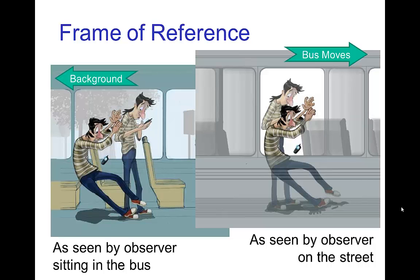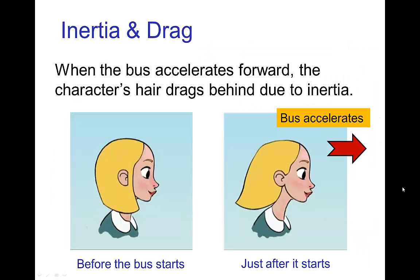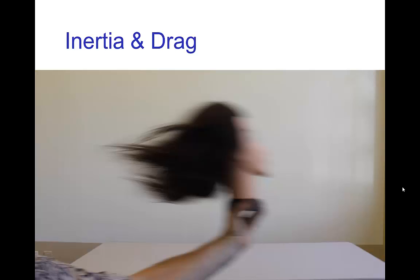And to the person who's falling, they seem to be falling behind them. But really, it's inertia that's causing this effect. And if we have a character sitting on the bus, when the bus accelerates forward, her hair seems to drag behind. This is just exactly the same effect as we just saw. Here's a quick video of that.